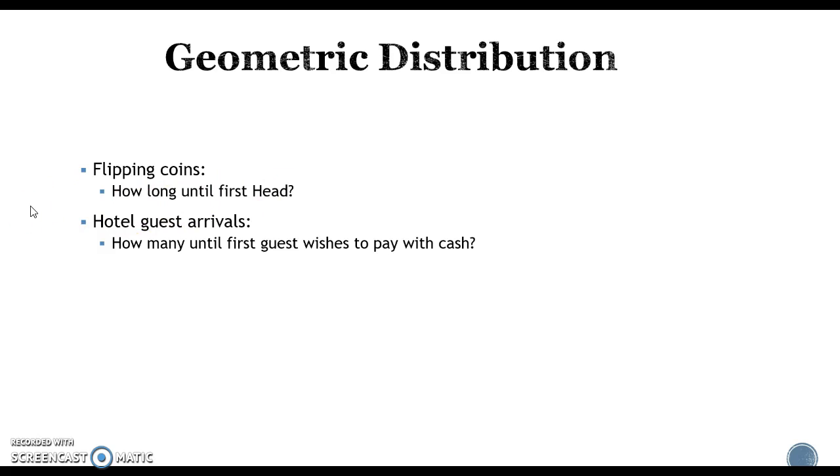Another example is hotel guests arriving, and how many get there before the first person wants to pay with cash? So you could have the first person of the day walk up and want to pay you with cash. What is the probability of that happening? Or what is the probability that three people arrive and then the fourth one wants to pay with cash?